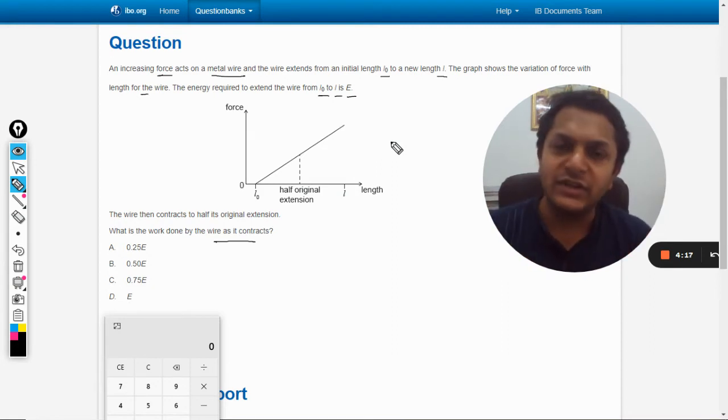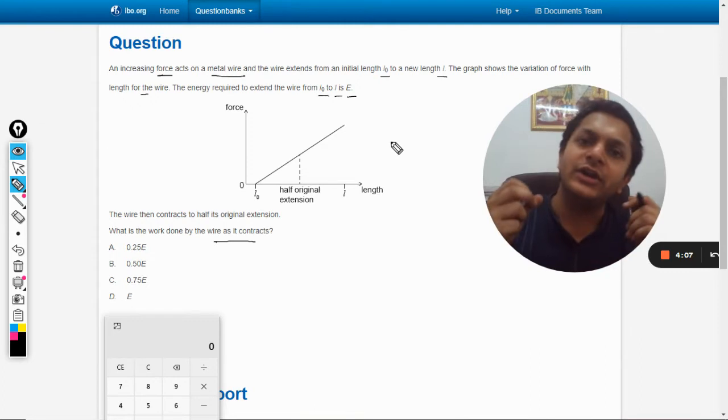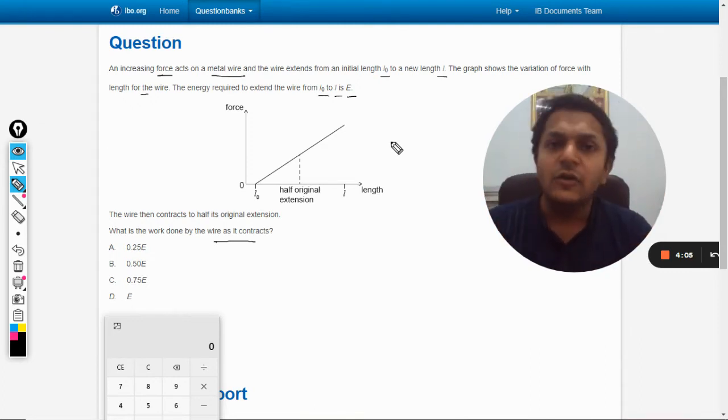In these kinds of questions, one thing is very important: there is a formula for the potential energy in the spring, and that is half kx squared. Whatever be the material—it is wire or a bar—it can be treated as a spring, and the formulas for the spring are actually applicable on every wire. The only thing is that the value of k is different; it depends upon the Young's modulus and various other parameters, but half kx squared is absolutely correct.